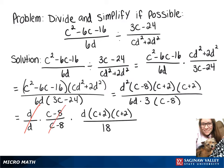Now, d over d and c minus 8 over c minus 8 will cancel out, leaving us with d times c plus 2 squared over 18.